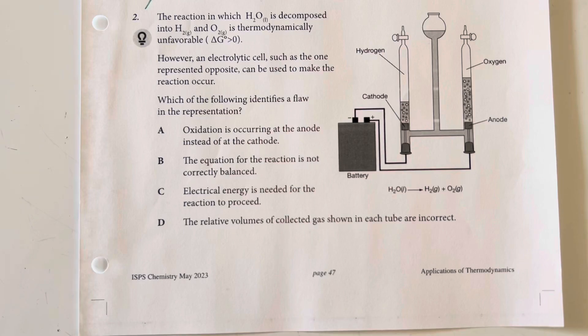The reaction in which water is decomposed into hydrogen and oxygen is thermodynamically unfavorable, with a delta G greater than zero. However, in an electrolytic cell, such as the one represented opposite, can be used to make the reaction occur. Which of the following identifies a flaw in the representation?